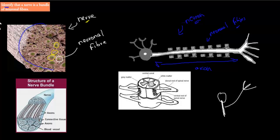In between these neurons, you also have connective tissue that just keeps them in place, and blood vessels as well. Obviously, we need to have blood supply to our neurons. So in this bundle — this nerve — you have lots of neural fibers connected with blood supply and held together by connective tissue. That's what we call a nerve. So if you pinch a nerve, that doesn't mean you pinch only one neuron — it means you pinch a whole lot of neurons.